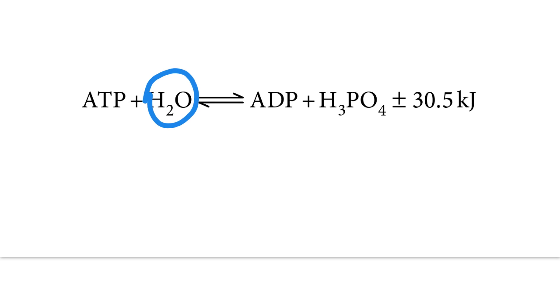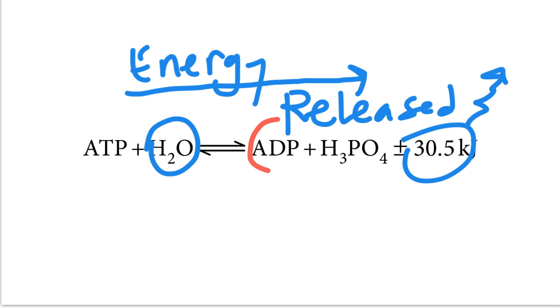Once ATP is hydrolyzed or broken down, energy is released. Remaining ADP molecules stay in the cell, and whenever energy is available to them by means of steps of respiration, the ATP is regenerated. This reaction is reversible.